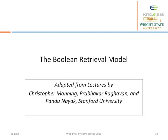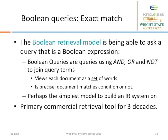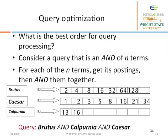Let's look at some facts about the boolean retrieval model and consider preliminary query optimization techniques. Boolean queries are precise — they utilize AND, OR, and NOT operations to join query terms. Surprisingly, many real-world systems use boolean retrieval. Let's investigate if the order of processing matters. Consider the query: Brutus AND Calpurnia AND Caesar.